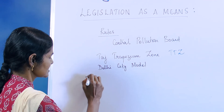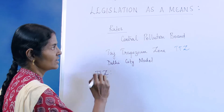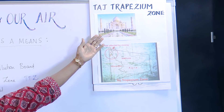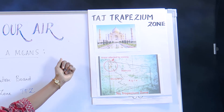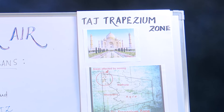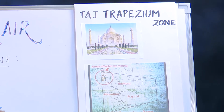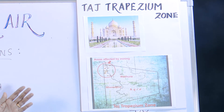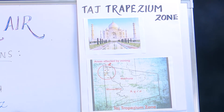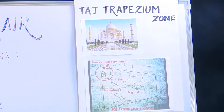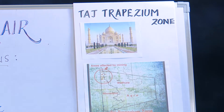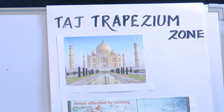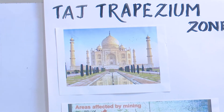Let us start with the TTZ, that is the Taj Trapezium Zone. Anyone, even a child from first standard, would identify this as the Taj Mahal. But as the days go by, the beauty of it is completely going away. It was deteriorating at a very fast rate. This is somewhere in Agra, which is very close to Delhi.